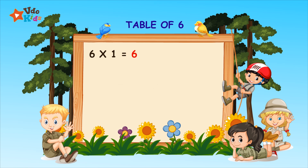Six ones are six. Six ones are six. Six twos are twelve. Six twos are twelve. Six threes are eighteen.